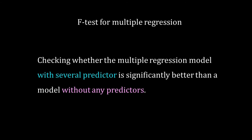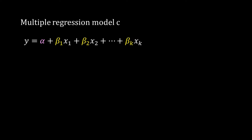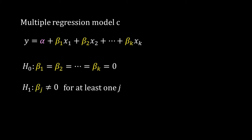Now, back to the F-test for multiple regression. We use this test to check the overall significance of our regression model — whether our multiple regression model with several predictors is significantly better than a model without any predictors. Like other hypothesis tests, we will have two models: a null model and an alternative model. The generalized multiple regression model is y = α + β₁x₁ + β₂x₂ + ... + βₖxₖ, so we have k predictors x₁ to xₖ. Our null hypothesis is that the coefficients of all predictors are zero, i.e., all betas are zero. The alternate hypothesis is that at least one beta is not equal to zero.